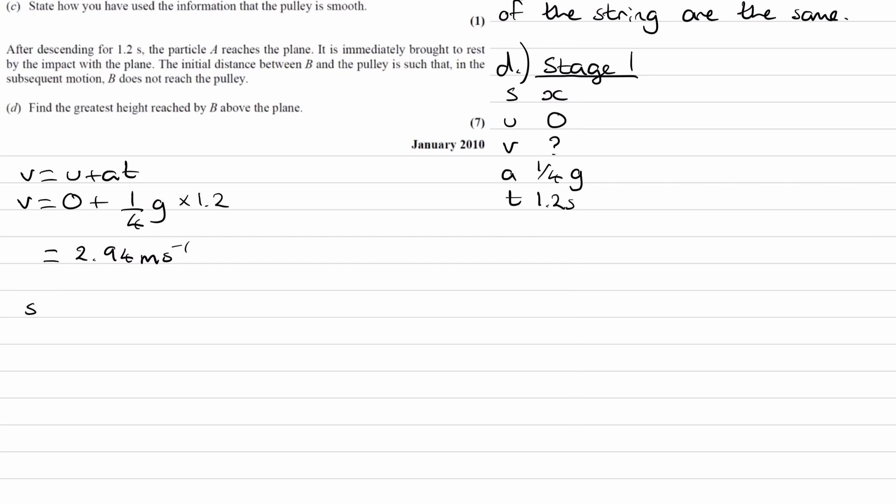Now let's work out distance X. So we can use the equation S is equal to UT plus 1/2 AT squared. So S is X. U is zero. So this whole term would be zero. So that's equal to 1/2 AT squared. Type this in. And we end up with 1.764 meters.